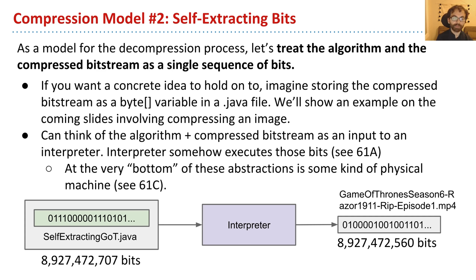Now, if you want a concrete idea to hold on to what I mean by this, let's imagine that we store the compressed bitstream as a hard-coded variable of type byte array. And that will result in a Java file, which you can think of as self-extracting. And so ultimately, the algorithm here, plus the data, the compressed bitstream, we're thinking of it as an input to an interpreter, and the interpreter will somehow execute those bits. And at the very bottom of all of the abstractions we have, there'll be some kind of physical machine that does the work, and that's something you would see in 61C. So that is going to be our new model for compression. And the motivation was, we wanted to avoid this sneakiness, where a decompression algorithm could be arbitrarily complicated. So in the next video, we'll reflect just briefly on what this means for us, and we'll see a little example of this that's a little different.